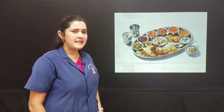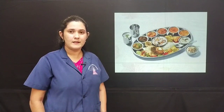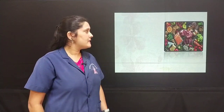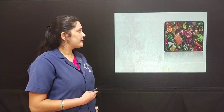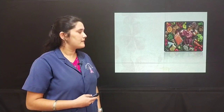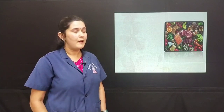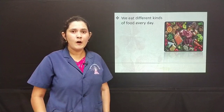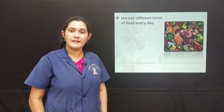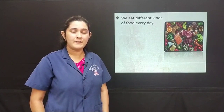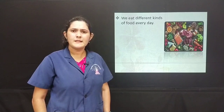Is all the food in this plate the same? No, it is different. What can you see in this plate? You can see a variety of food — meat, eggs, nuts, vegetables, fruits. All this food is different. We eat different kinds of food every day. They are different in taste, appearance, and have different kinds of nutrients.